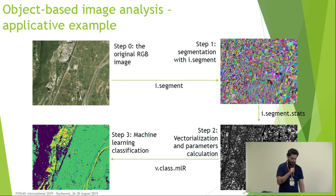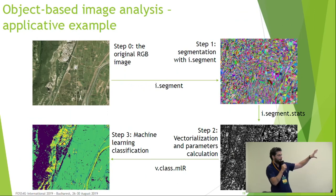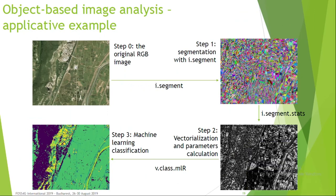Here we can see a quick overview of how it works: this is the original image, then you can see the segmented image, the vector realization of the segmented image with the whole set of parameters, and then the machine learning classification.